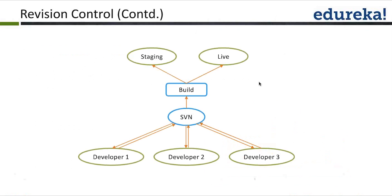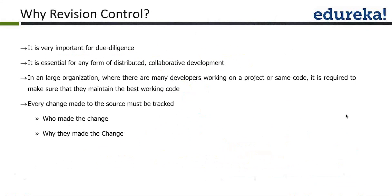Talking more about the revision control system: three developers work together as a team and check in their code to the SVN system. From SVN, a build is created from the source code. The build is then pushed to a staging or pre-production environment, tested and verified, and then pushed to the production or live environment.